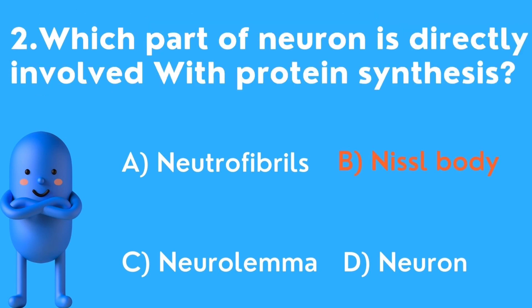The answer is Nissl body — also called chromatin granules or Nissl substance. The Nissl body is the rough endoplasmic reticulum with ribosomes in nerve cells. Since the rough endoplasmic reticulum with ribosomes is responsible for protein synthesis, the Nissl body is the correct answer.